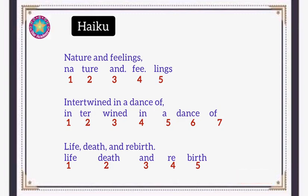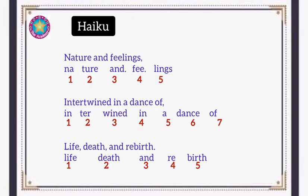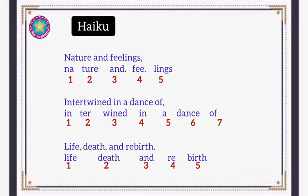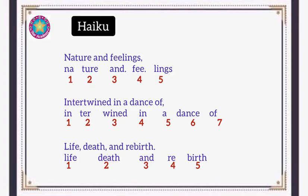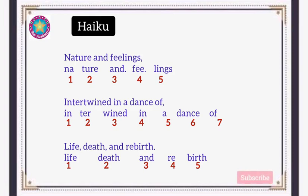In the first line, 'nature and feelings' — these are five syllables. In the second line, 'intertwined in a dance of' — these are seven syllables. In the third line, 'life death and rebirth' — these are five syllables. So this is the structure of a Haiku poem: five syllables in the first line, seven syllables in the second line, and five syllables in the third line — totaling seventeen syllables, arranged as five, seven, and five.